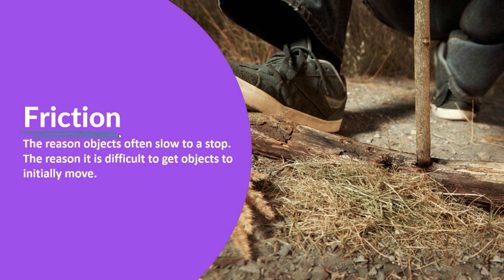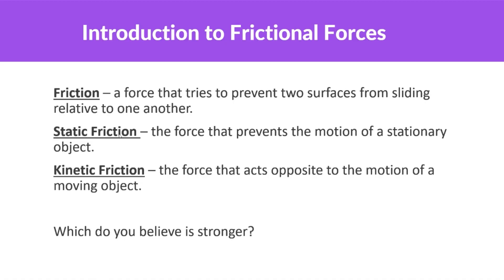The reason objects often slow to a stop, the reason it is difficult to get an object to initially move — that's friction. Friction is a force that tries to prevent two surfaces from sliding relative to one another. Static friction is the force that prevents the motion of a stationary object. Kinetic friction is the force that acts opposite to the motion of a moving object.